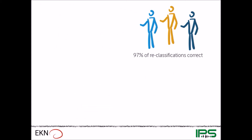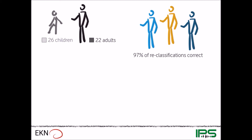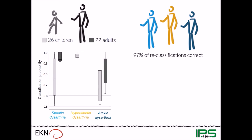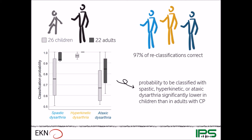The first result, and this was crucial for the further procedure, was that 97% of the speakers of the comparison groups were reclassified correctly. So we were able to apply our model onto the groups of children and adults with CP. What is depicted here is the classification probability — that is, the probability to be classified with either spastic, hyperkinetic, or ataxic dysarthria, both for the children and also the adults with CP. And as you can see here, the classification probability was significantly lower in children than in adults with CP, and this was especially clear in terms of spastic dysarthria.